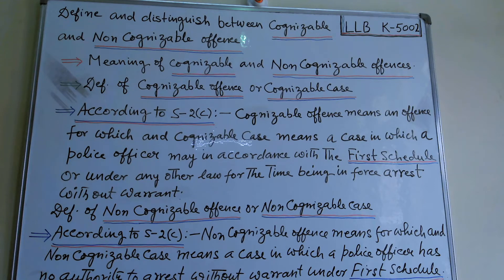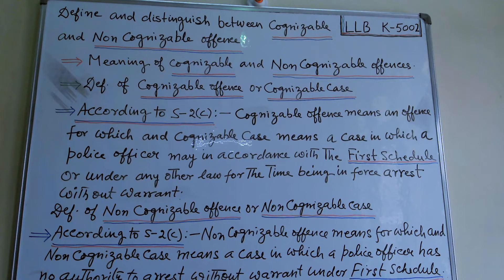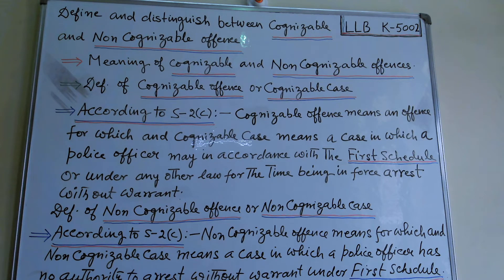In non-cognizable cases, a police officer has no authority to arrest a person without warrant. To arrest a person, a police officer has to obtain an order from the magistrate, then he can arrest. So there are two types of cases — cognizable cases and non-cognizable cases — and I think the difference between these two is clear from the definitions under Section 2(c).